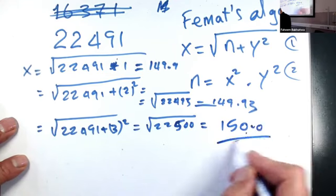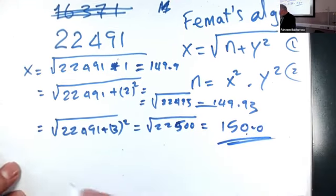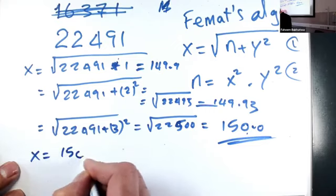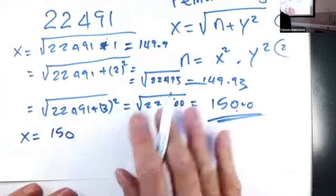So that means this is it. We are there. So x equals 150. Now we go for the second formula.